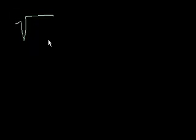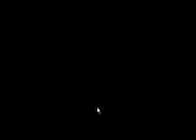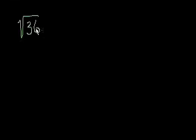Some people would argue that what we're actually doing is making it more complicated, but let's see. So if I were to give you the square root of 36, you'd say that's easy. That's just equal to 6 times 6, or the square root of 36 is just 6.